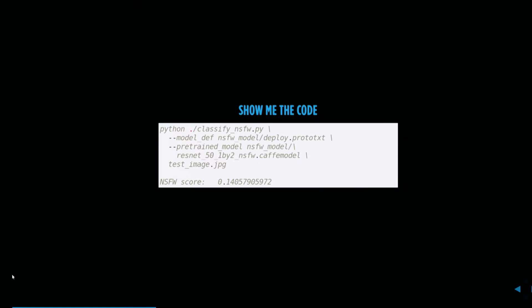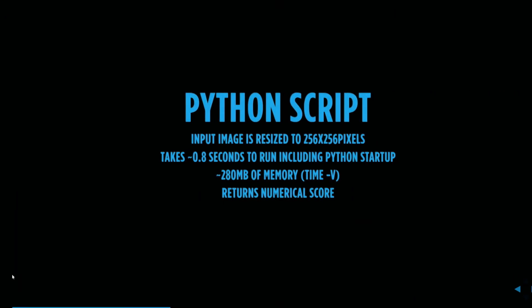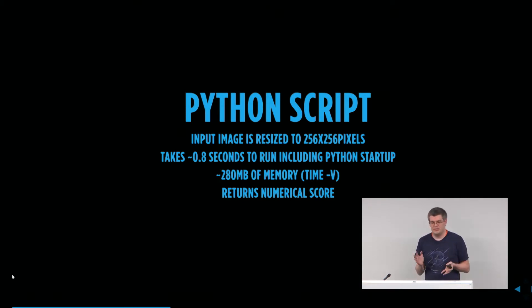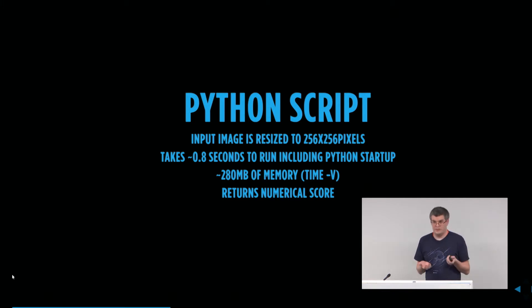Show me the code. It's a Python script — you run it with `python classify_nsfw`. You give it a pre-trained model and an input image, and it outputs a score; in this case, 0.14. The input image is resized to 256×256 pixels. It takes about 0.8 seconds to run, including the Python startup, and about 280 megabytes of memory. It returns a numerical score.